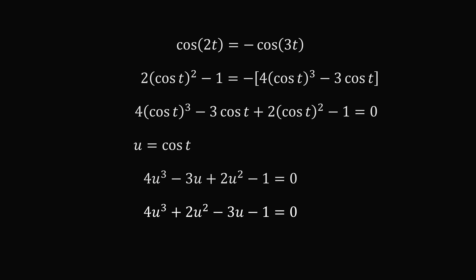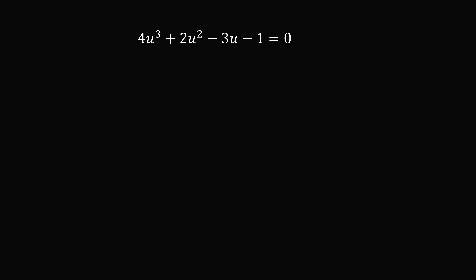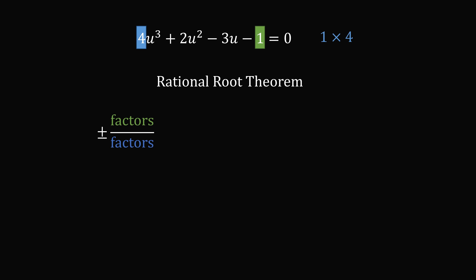How do we solve this cubic equation? We start by experimenting with values using the rational root theorem. We look at the coefficient of the constant term — in this case 1 — and the coefficient of the highest power — in this case 4 attached to u cubed. The factors of 1 are just 1, and the factors of 4 are 1, 2, and 4. So the rational root candidates are plus or minus 1, plus or minus 1 half, and plus or minus 1 over 4 — giving us 6 candidates for rational roots.